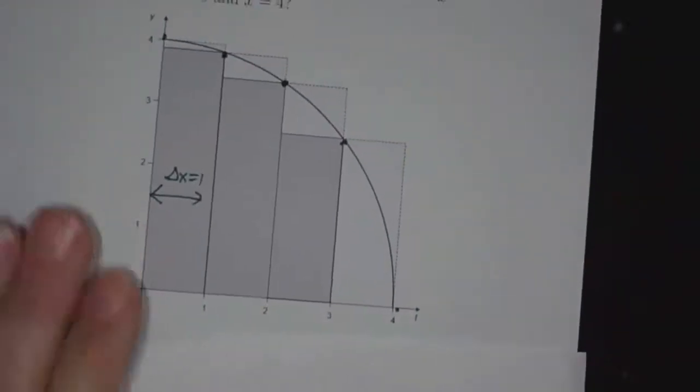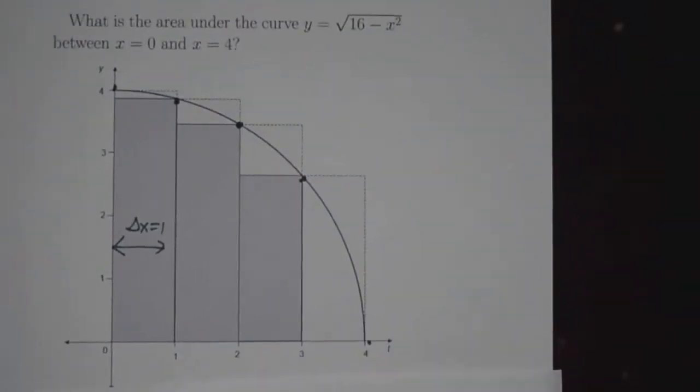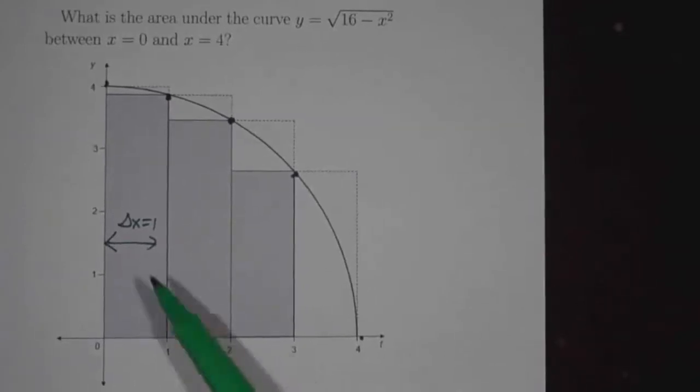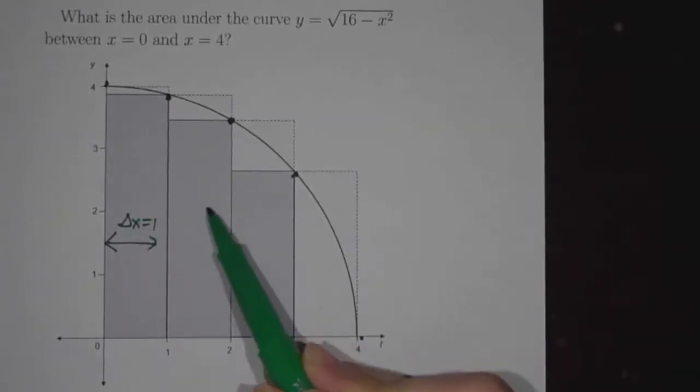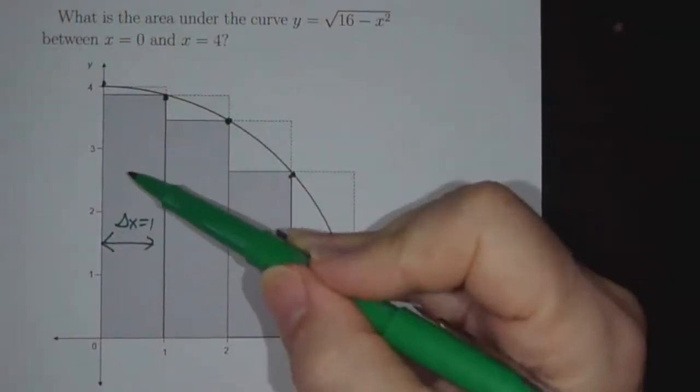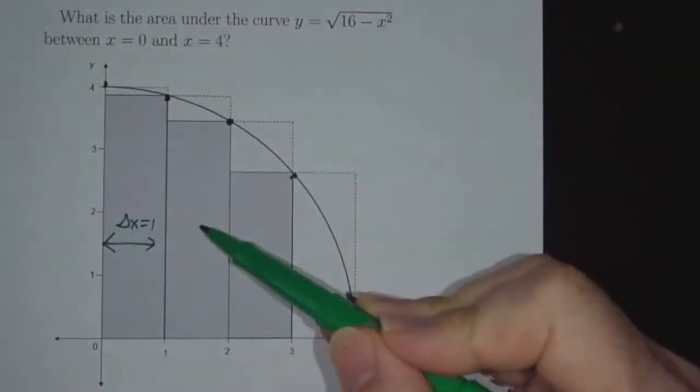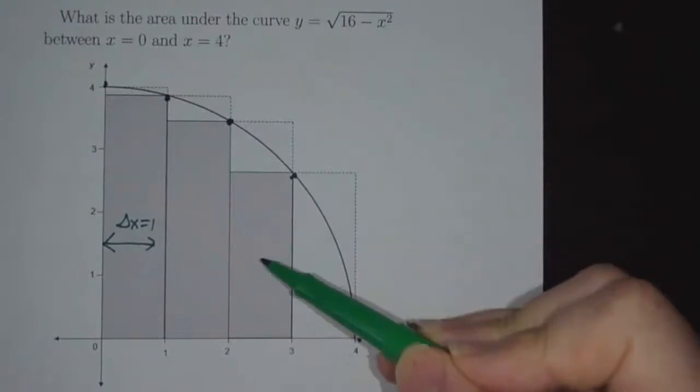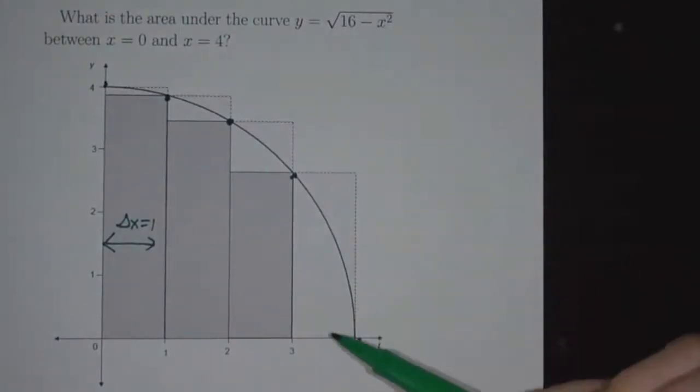What does the average mean geometrically? Or what does the upper and lower mean geometrically? The lower bounds are the areas of these deeply shaded rectangles. So this has area 3.87, this has area 3.46, this has area 2.65, this has area 0.